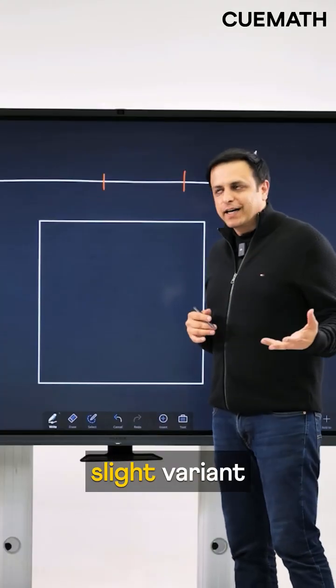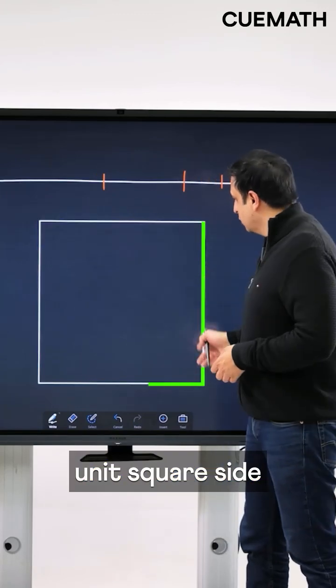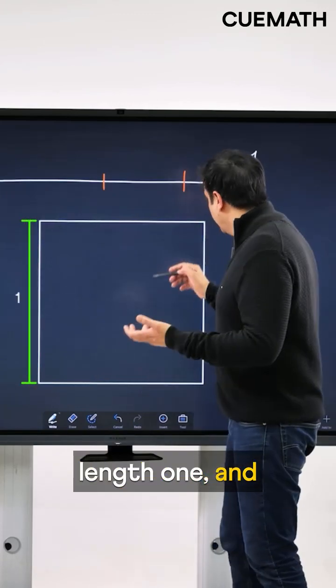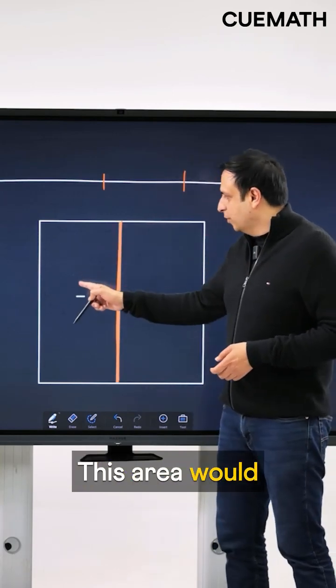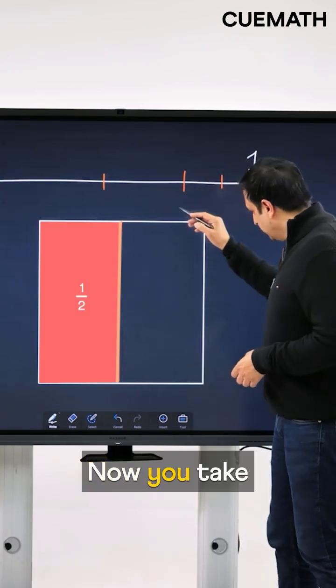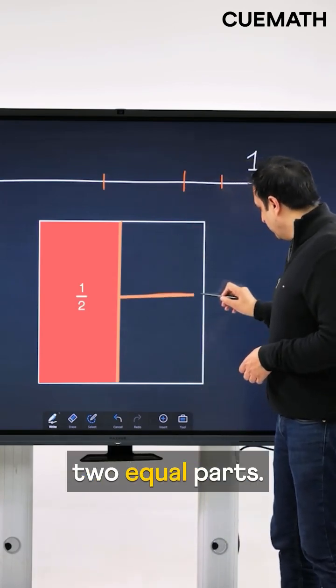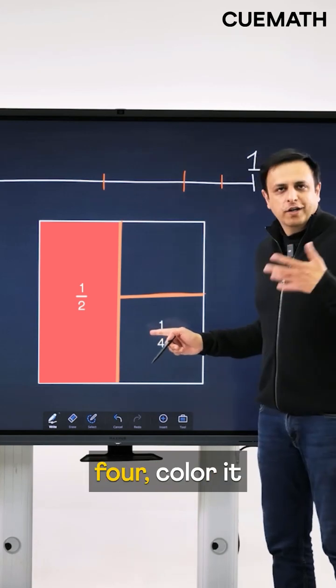Now our next idea is a slight variant of the first idea. You take this unit square, side length 1 and first divide it into two equal parts. Now this area would be 1 over 2, color it red. Now you take the remaining area, divide it into two equal parts again. This would be 1 over 4, color it red again.